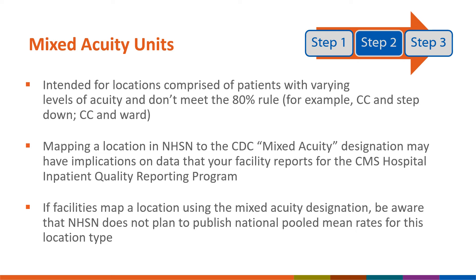Mixed acuity units are intended for locations comprised of patients with varying levels of acuity that do not meet the 80% rule. If you decide to map a location using the mixed acuity designation, be aware that NHSN does not plan to publish national pooled mean rates for this location type at this time. Additionally, mapping locations using the mixed acuity designation could have implications on data reported for the CMS Hospital and Patient Quality Reporting Program. More information on mixed acuity units can be found in Chapter 15 of the Patient Safety Manual.